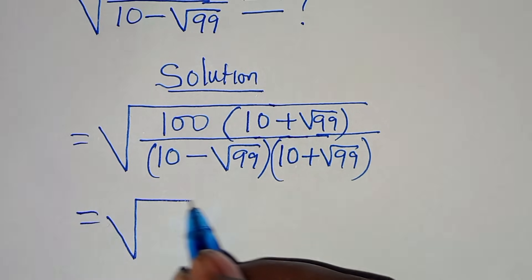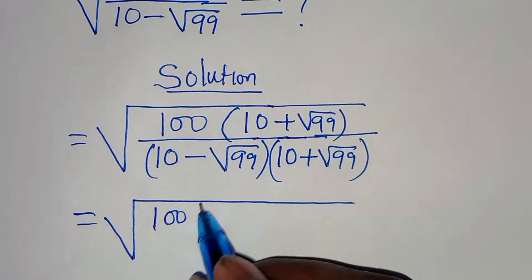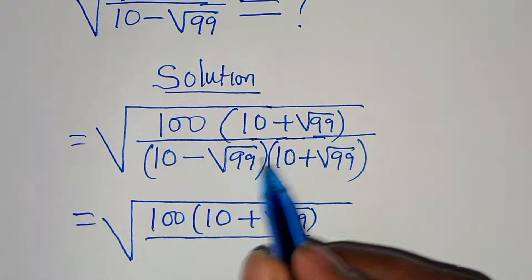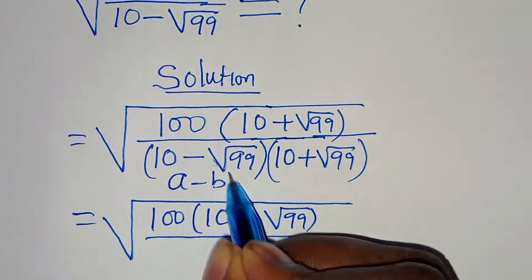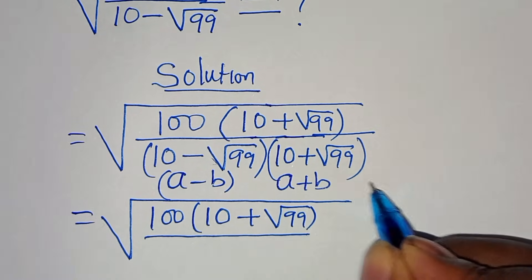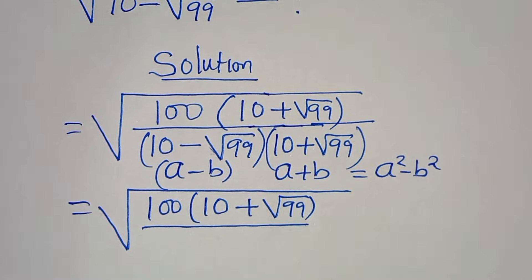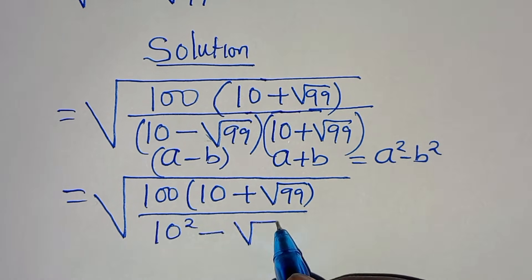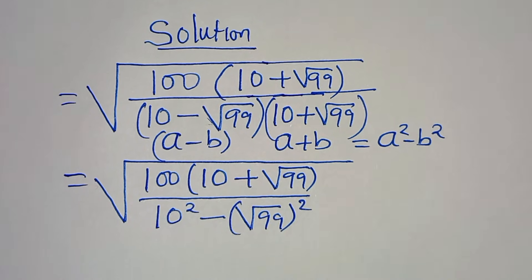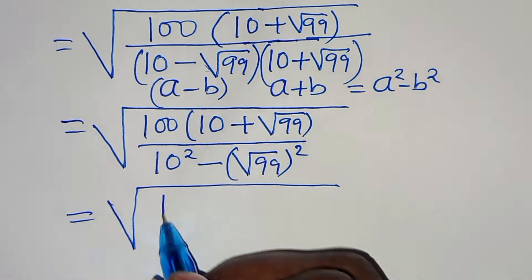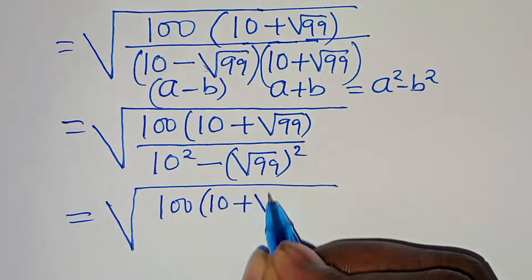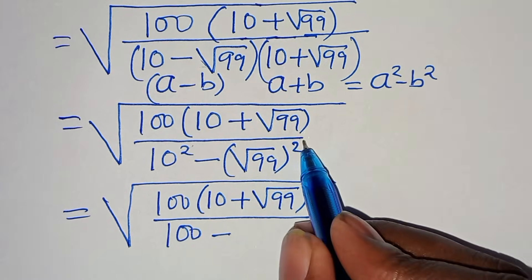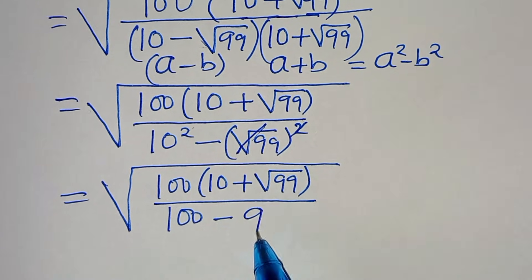In the numerator we have square root of 100 times the quantity 10 plus square root of 99. In the denominator, 10 minus square root of 99 times 10 plus square root of 99 is in the form of a minus b times a plus b, which equals a squared minus b squared. Applying the difference of two perfect squares gives 10 squared minus square root of 99 squared, which is 100 minus 99.